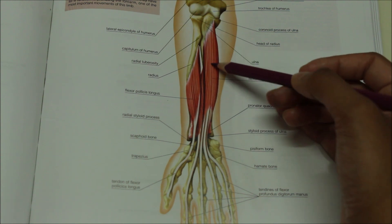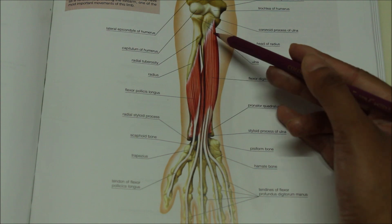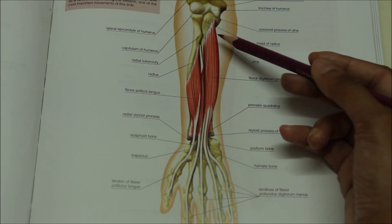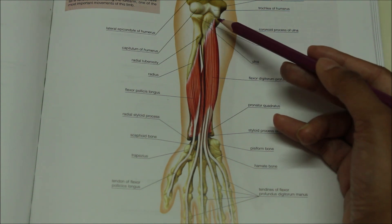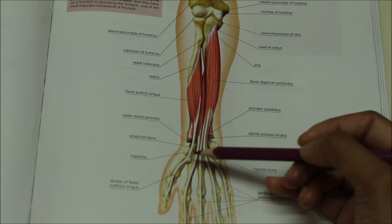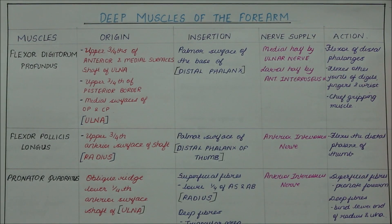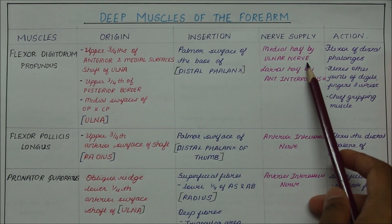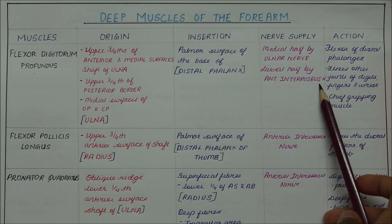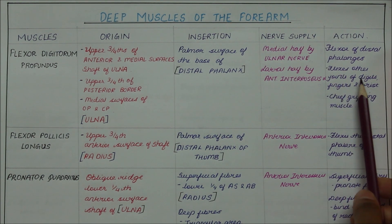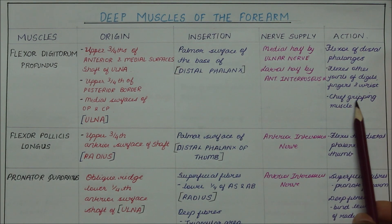The medial half of the flexor digitorum profundus is supplied by the ulnar nerve, while the lateral half is supplied by the anterior interosseous nerve, which is a deep branch of the median nerve. Its action includes flexion of the distal phalanges, flexion of other joints of the digits and the wrist, and it is a chief gripping muscle.